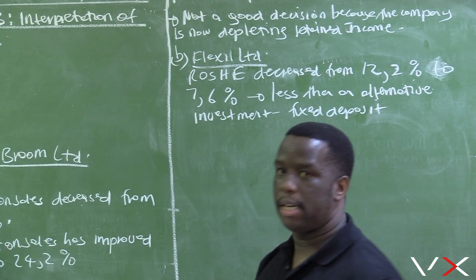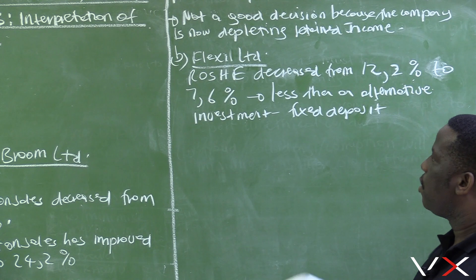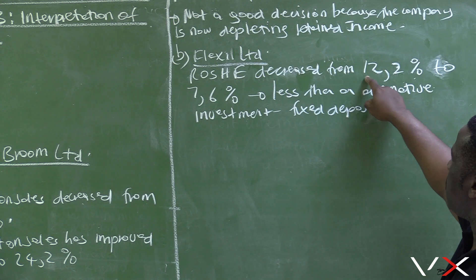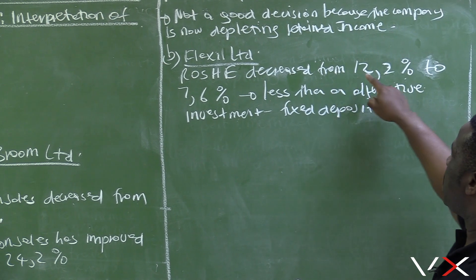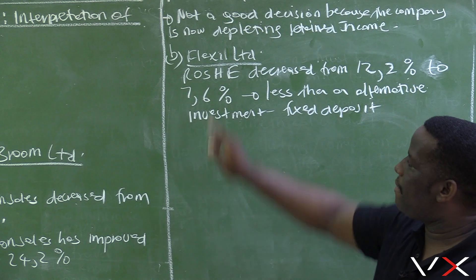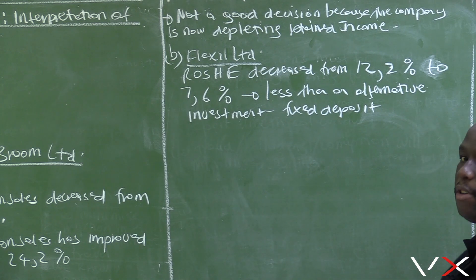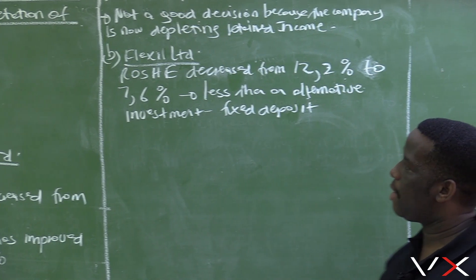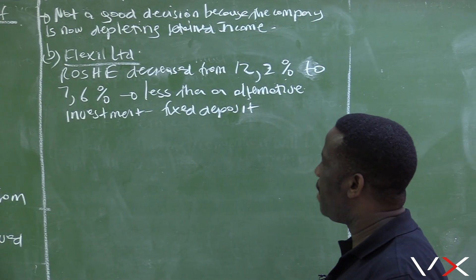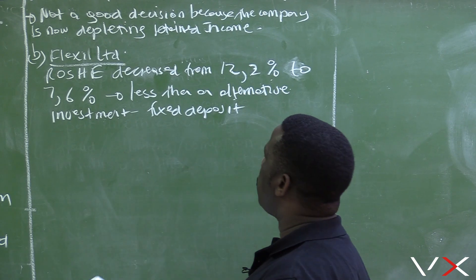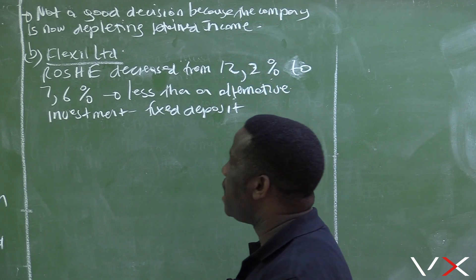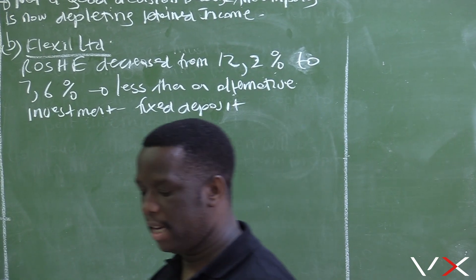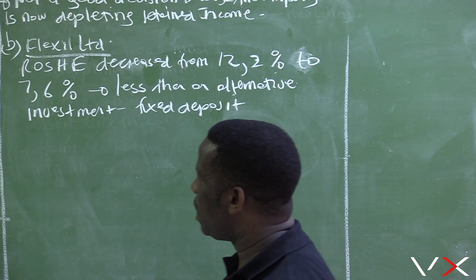We are not happy with this decrease. The percentage return on average shareholders equity decreased from 12.2 percent to 7.6 percent, and 7.6 percent is too little — it is even less than an alternative investment. If a shareholder decides to invest their money into a fixed deposit, they would be getting more than 7.6 percent, so this return is not good when compared to an alternative investment.